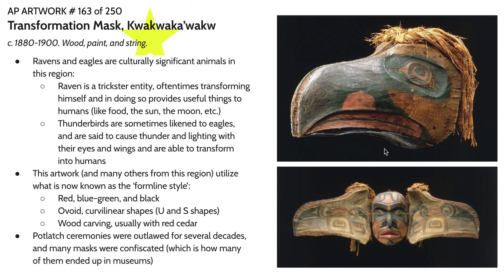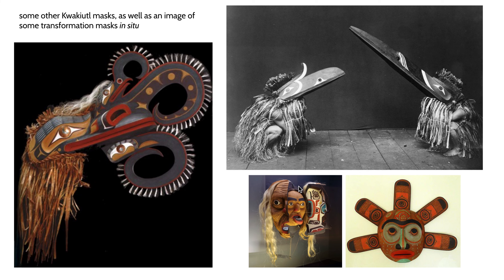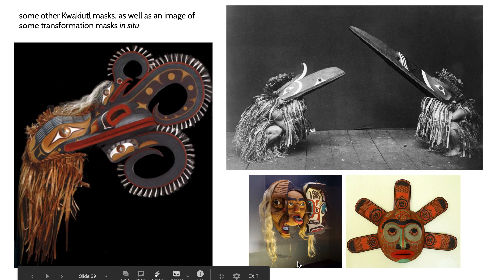Unfortunately, potlatch ceremonies, like many other Native American and First Nations customs, were outlawed for several decades, and a lot of the objects associated with potlatch ceremonies were confiscated — which is why many of these ritual objects are now in Western museums. There is a continuing repatriation effort to return these objects to their nations of origin. Here are a couple of other Kwakiutl masks showing lots of bird motifs. And in this image we're seeing a transformation of an old man into a new man.